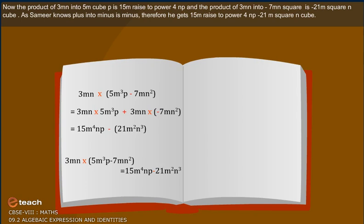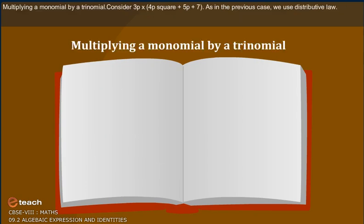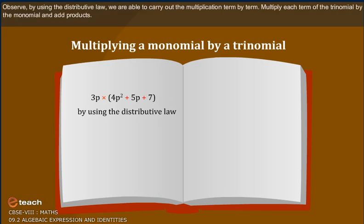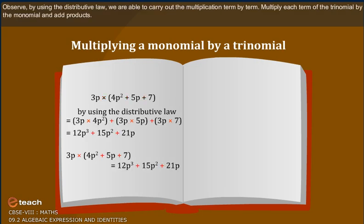The product of 3mn and minus 7mn squared is minus 21m squared n cubed. As Samir knows, plus into minus is minus. Therefore he gets 15m to the power 4 np minus 21m squared n cubed. Multiplying a monomial by a trinomial: consider 3p into bracket 4p squared plus 5p plus 7. Using the distributive law, we multiply each term of the trinomial by the monomial and add the products.